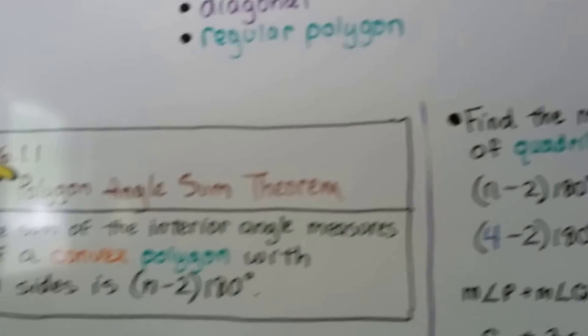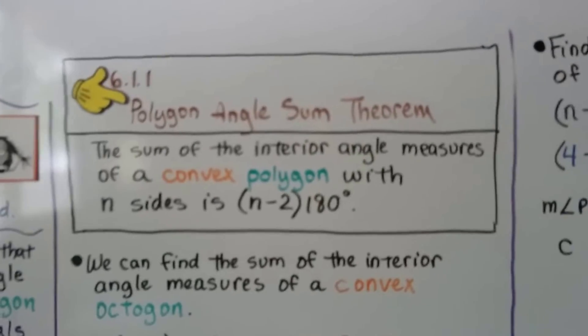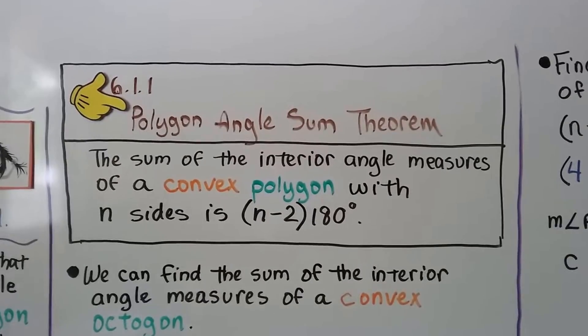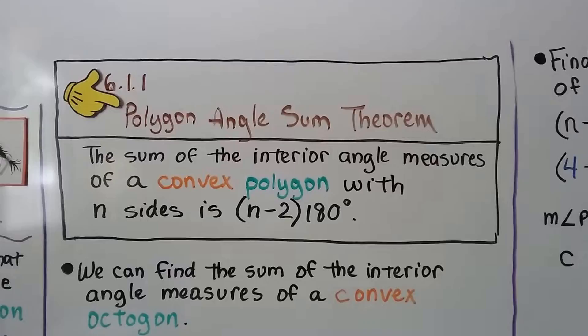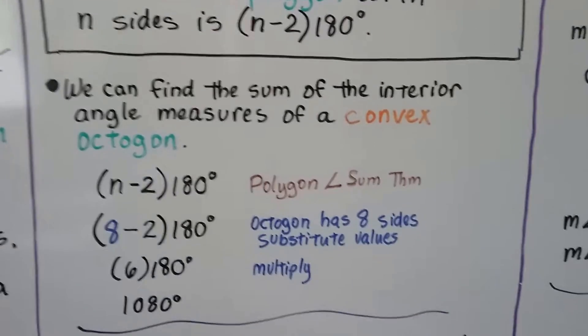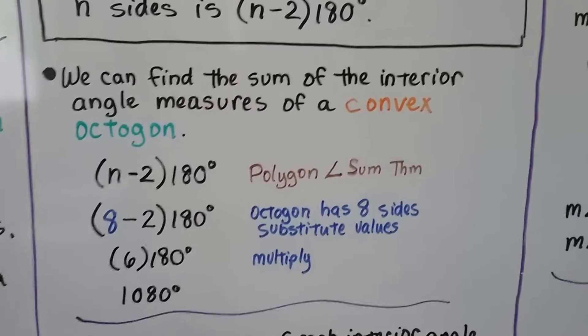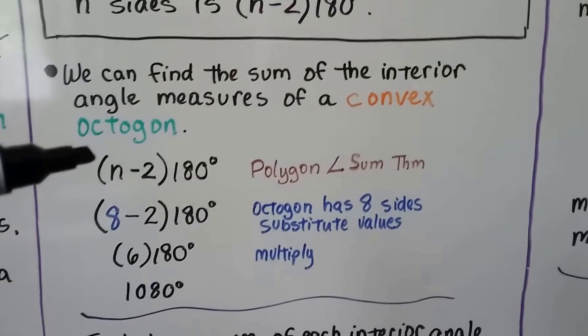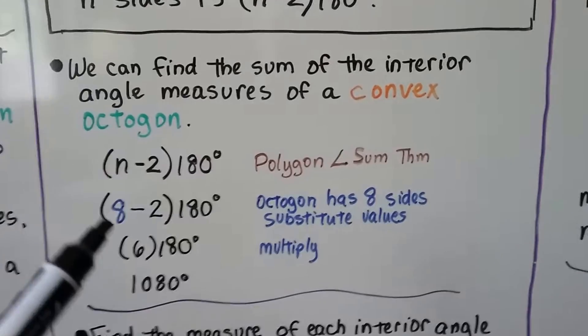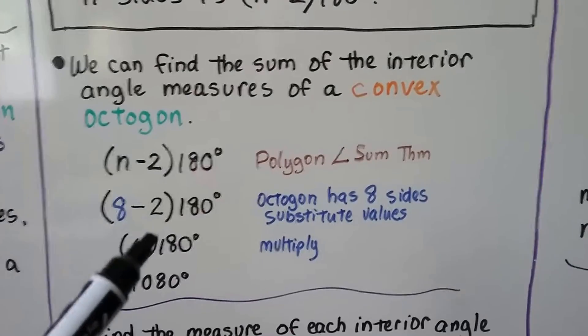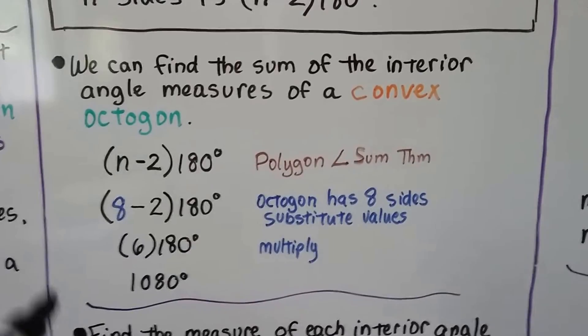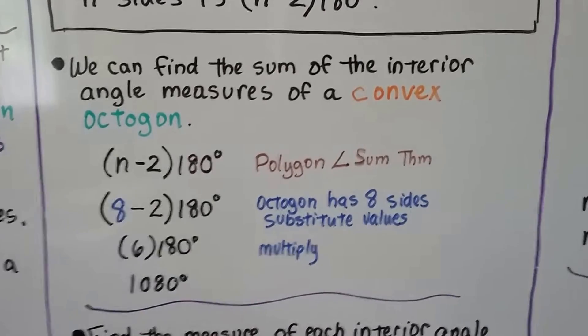Here's the polygon angle sum theorem: The sum of the interior angle measures of a convex polygon with n sides is (n-2) times 180 degrees. We can find the sum of the interior angle measures of a convex octagon using the polygon triangle sum theorem. An octagon has eight sides, we substitute that in, we do 6 times 180 degrees. The sum of the interior angle measures of an octagon is 1080 degrees.